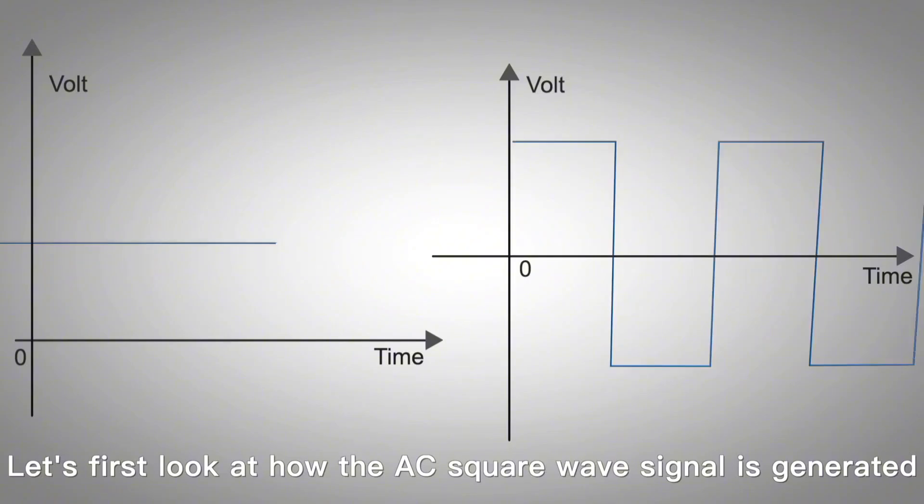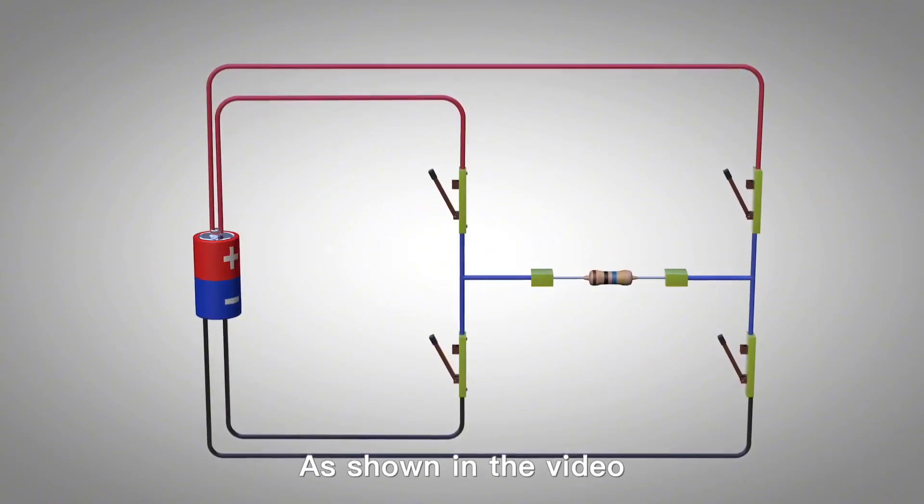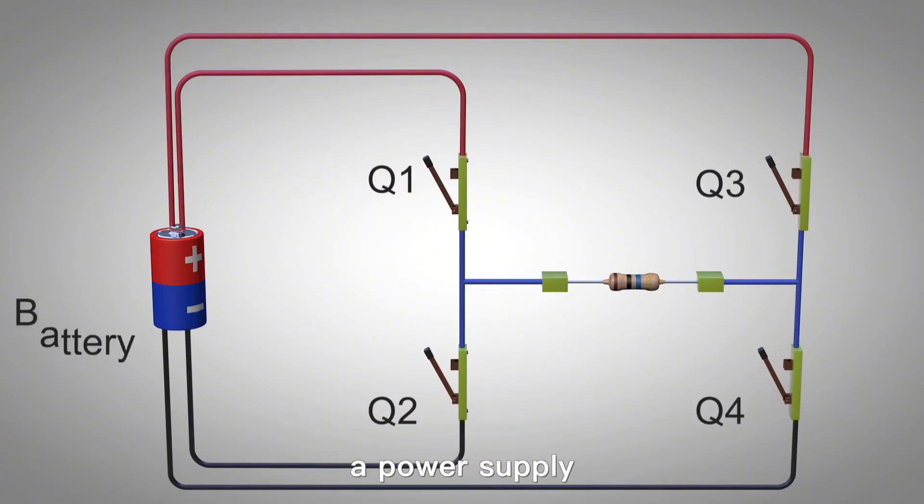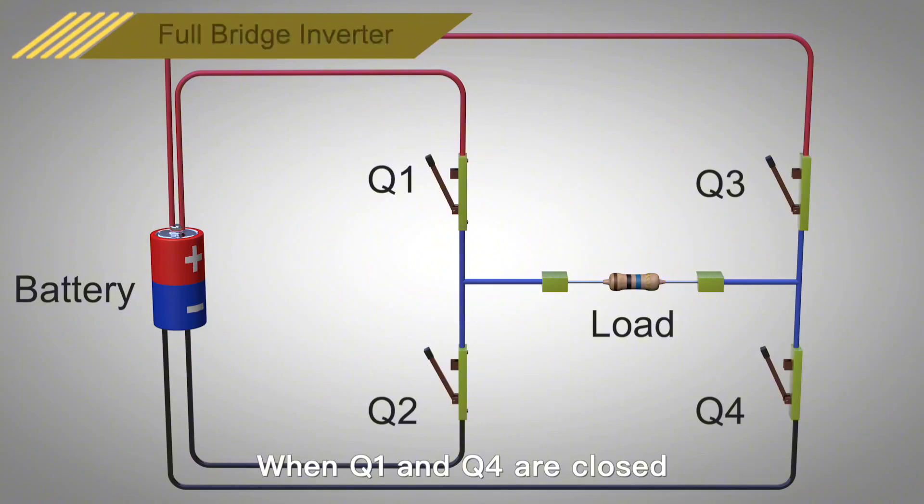Let's first look at how an AC square wave signal is generated. As shown in the video, the circuit includes four switches, a power supply, and an output load. This inverter is called a full-bridge inverter.